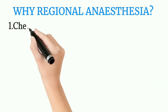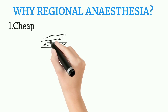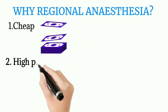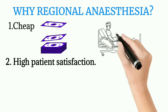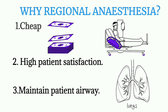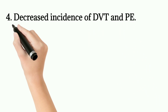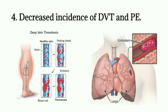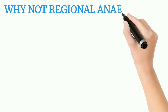Why regional anesthesia? It is cheap — the amount of money used in regional anesthesia is low compared to general anesthesia. Patient satisfaction is high. It helps maintain patient airway — the patient is breathing at a high level. There is also decreased incidence of DVT (deep vein thrombosis) and pulmonary embolism.